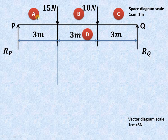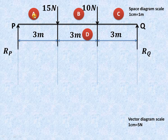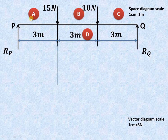The space between these particular forces is given some notations, known as Bow's notation. This space is named A, this space is named B, this is named C, and this is named D. So 15 Newton is representative of AB, BC is representative of 10 Newton, CD is representative of RQ, and DA is representative of RP.